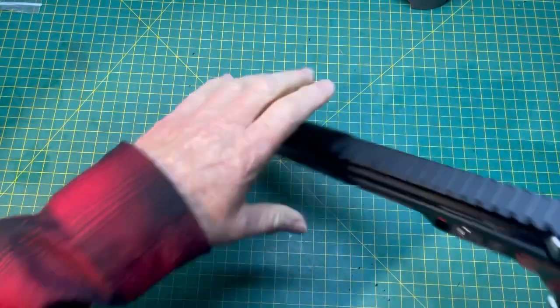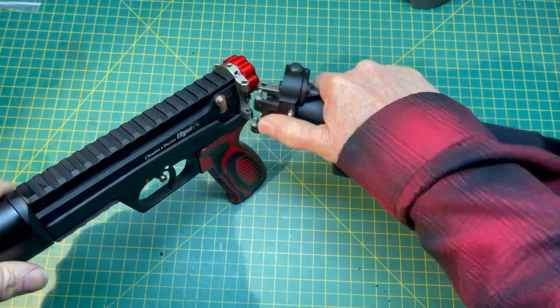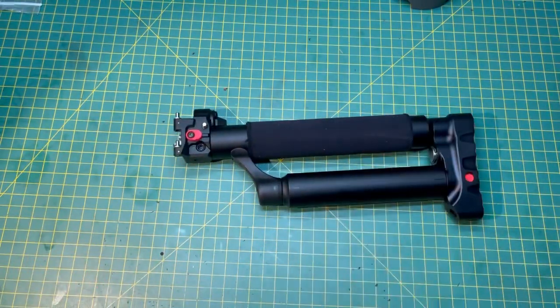First step you're going to do is just remove the air tube. If you guys don't remember, that's this little red button right here. We're not going to need the front of the action, just the buttstock.